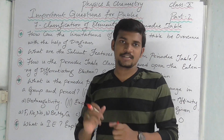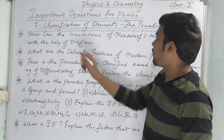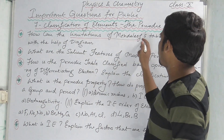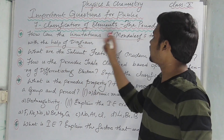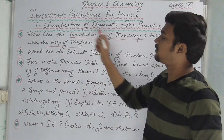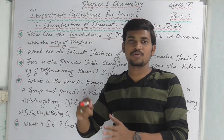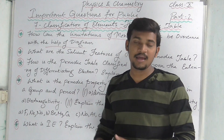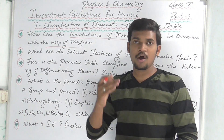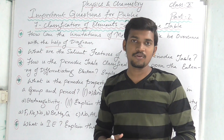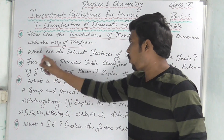First: how can the limitations of Mendeleev's table be overcome, with the help of a diagram? Limitations of Mendeleev — this is a very important question. The diagram is a long form of the periodic table, and you have to draw it.